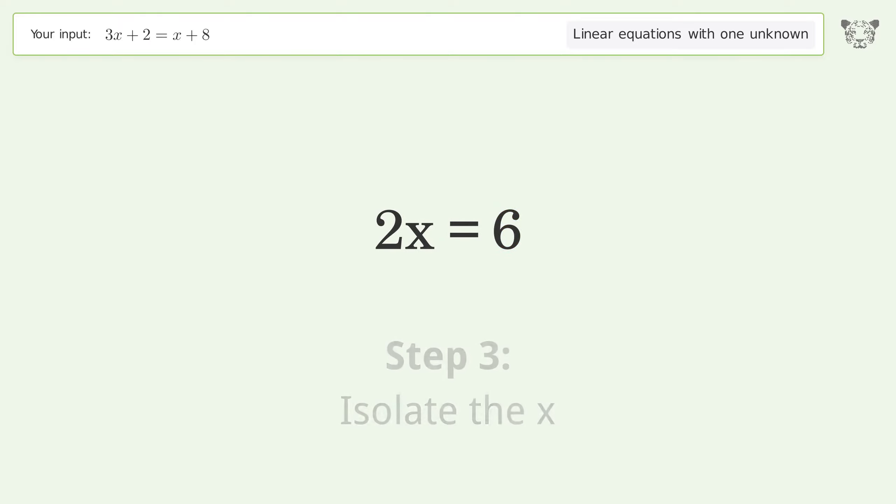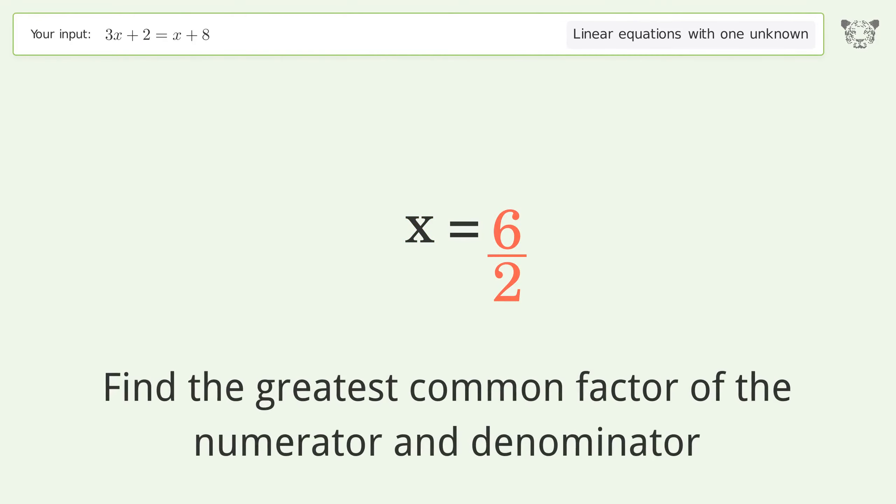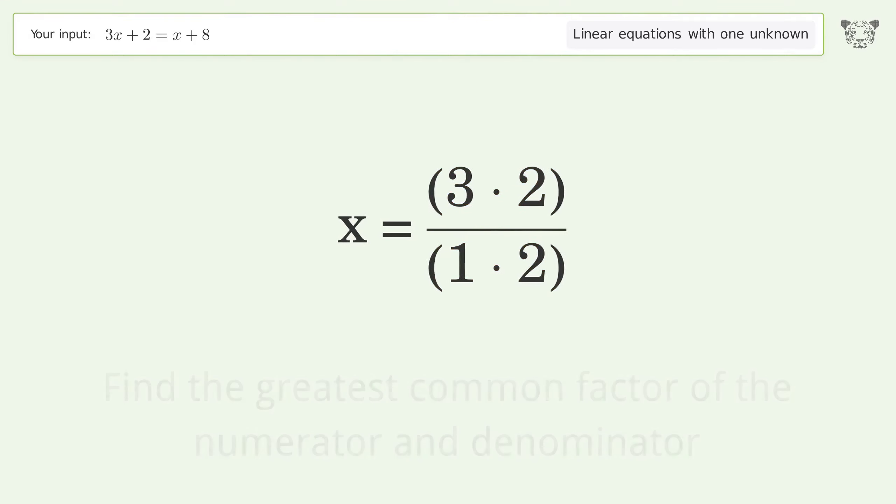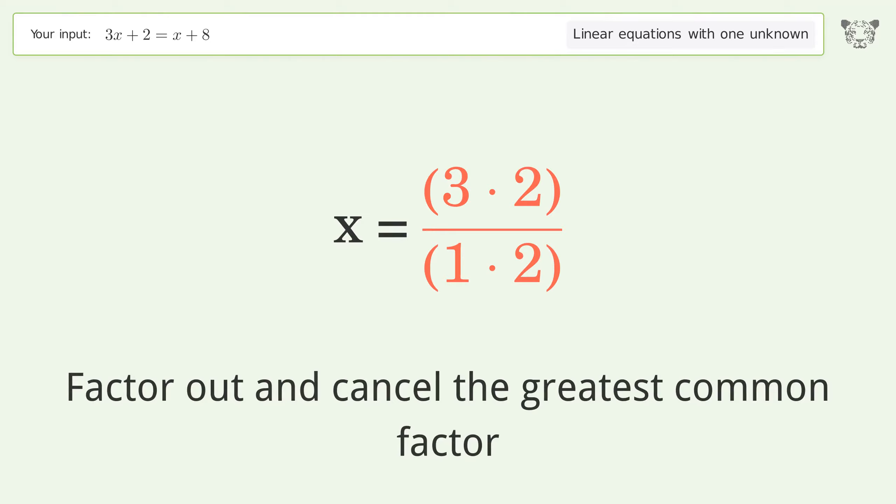Isolate the x. Divide both sides by 2. Simplify the fraction. Find the greatest common factor of the numerator and denominator. Factor out and cancel the greatest common factor.